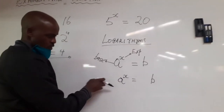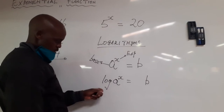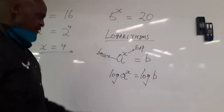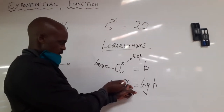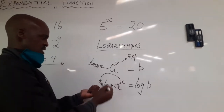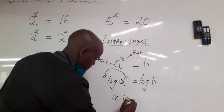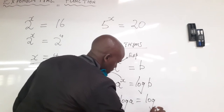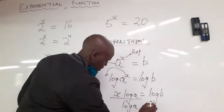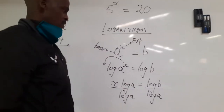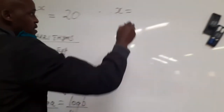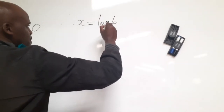To move x from the exponent position, you apply a log on both sides. This gives you log of a exponent x equals log b. You bring that exponent down as a coefficient, so it becomes x times log a equals log b. Then to solve for x, you divide both sides by log a. Therefore x is equal to log b over log a.